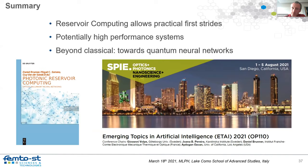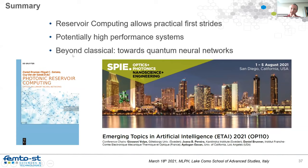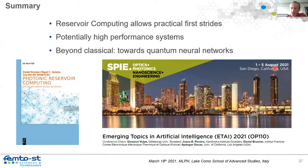In summary: reservoir computing allows very practical first strides in hardware implementation of neural networks. They are potentially very high performance — maybe not if you are obsessed with absolute accuracy, but they will allow us in a couple of years, or months, to unlock data rates and computing speeds — real computing, input in, computing out — at bandwidth absolutely out of reach for any electronic system. There's also an exciting development discussing what happens when all of this is done in the quantum regime, which may have very interesting implications. Thank you very much.